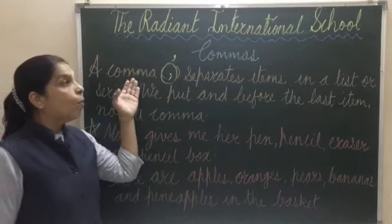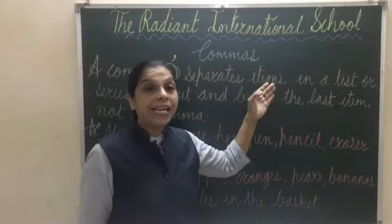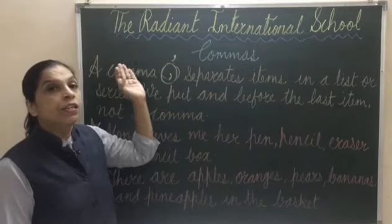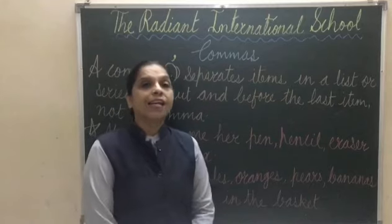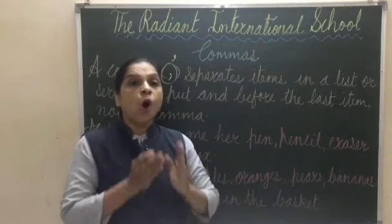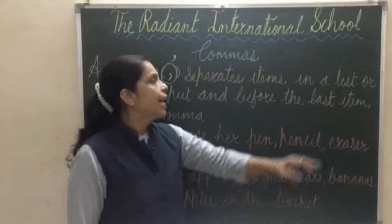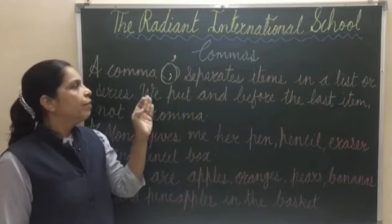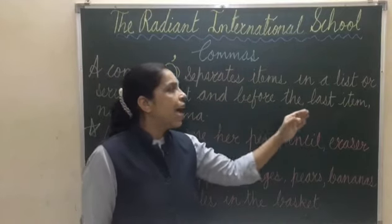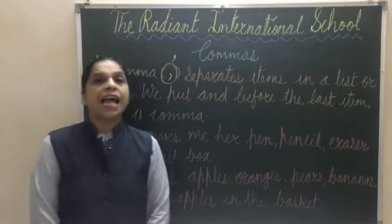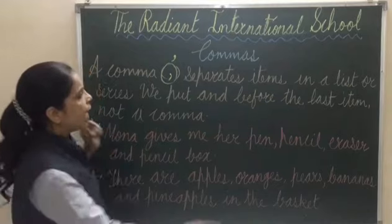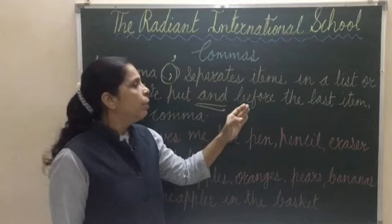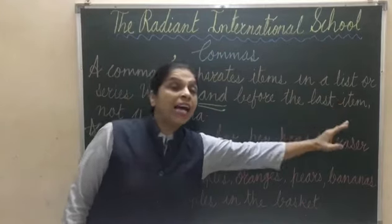A comma separates items in a list or series. Jo comma hai, woh items ko separate karta hai — alag karta hai — list mein ya series mein. We put 'and' before the last item — last item ke pehle hum log 'and' dalenge.